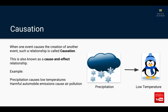So let's look at what causation is. When one event causes the creation of another event, such a relationship is called causation. This is also known as a cause and effect relationship. For example, precipitation causes low temperatures — whenever we have rainfall or snowfall the temperature of the environment goes down. In the same way, harmful automobile emissions cause air pollution. In both these examples there is a cause and effect relationship.